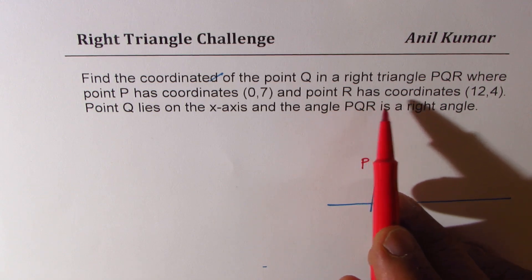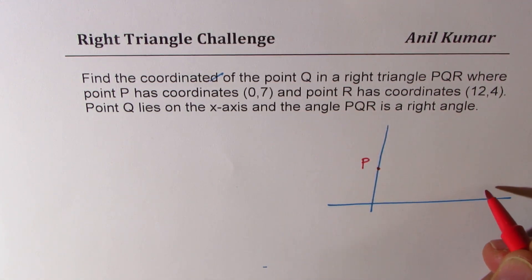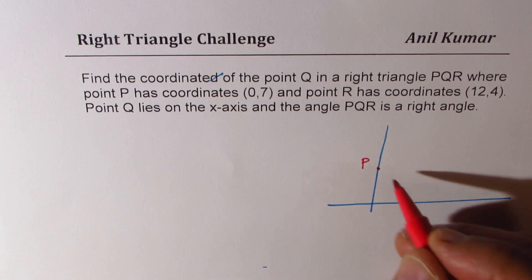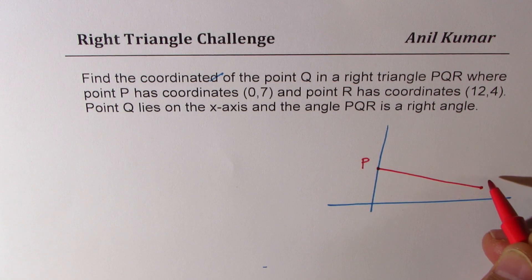We are given R as 12 and 4 values. So this is (0,7), let's say some point here is (12,4). So this is the point which is (12,4). We'll call this as R.